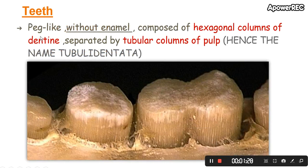Now we will discuss the peculiarities of their teeth. The teeth are peg-like, without enamel, and composed of hexagonal columns of dentine separated by tubular columns of pulp. We will discuss this in more detail later.